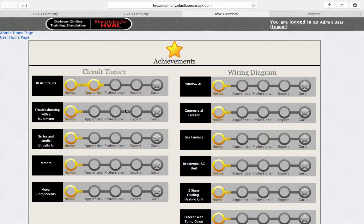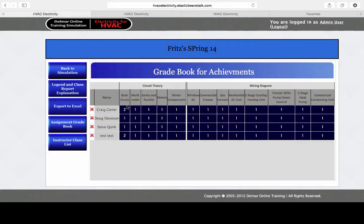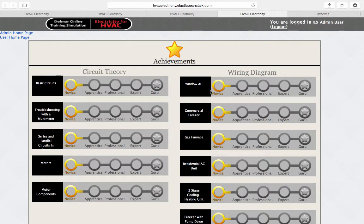As an instructor, you can go in and see each student's current level. For example, one way you could incorporate this very easily is that, let's say by three months into class, the students need to be at this level. For example, guru or expert.